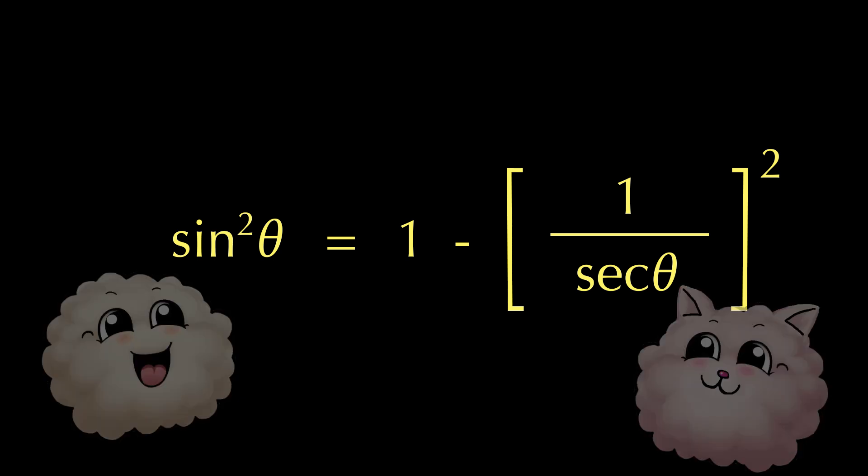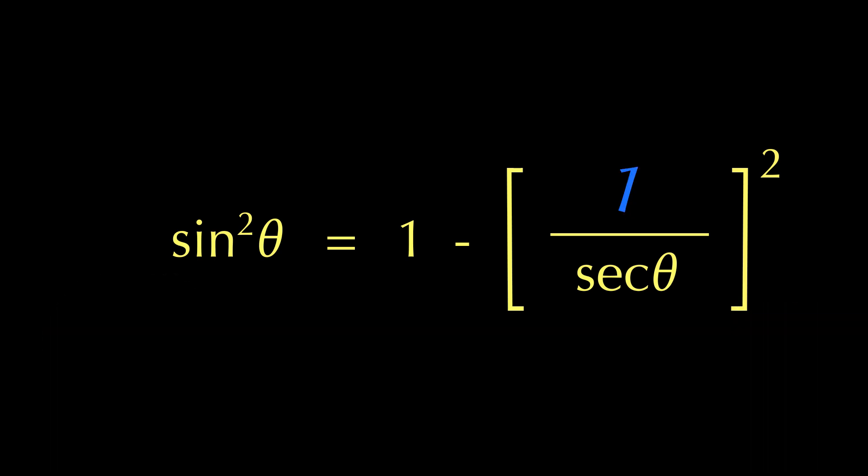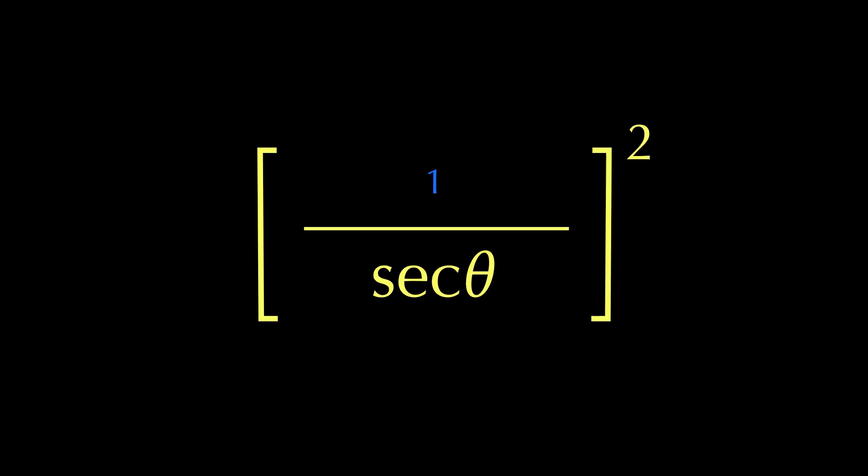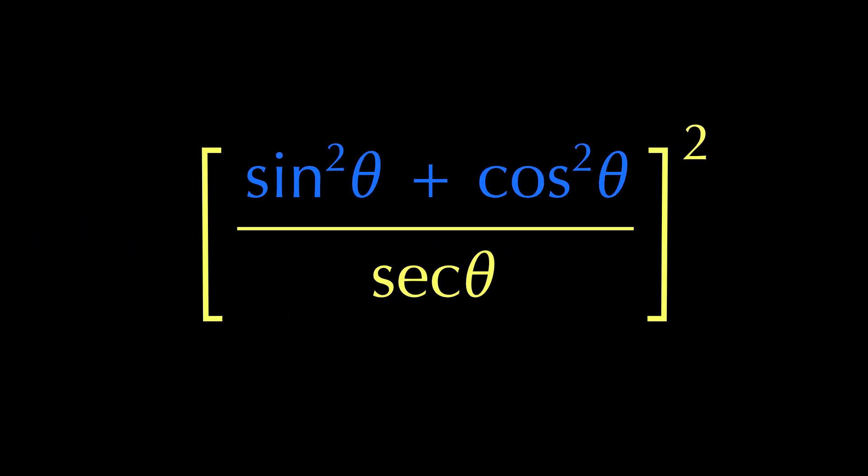Let's make this thing ridiculous. I decided to change this number 1 over here into, that's right, the Pythagorean identity once again. Giving us this ridiculous thing.